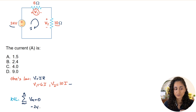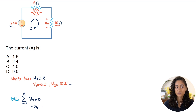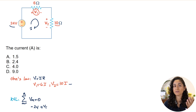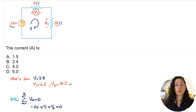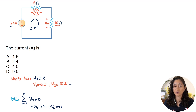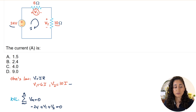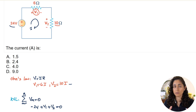Starting at the voltage source, since we're going from negative to positive we have minus 24 volts. Next, V1 goes from positive to negative, so we have plus V1. V2 also goes positive to negative, so we have plus V2. This must add up to zero. Note that using the reference handbook form — voltage rises equal voltage drops — gives the same answer.